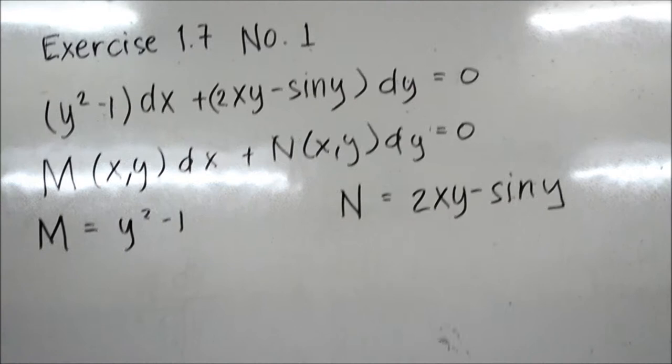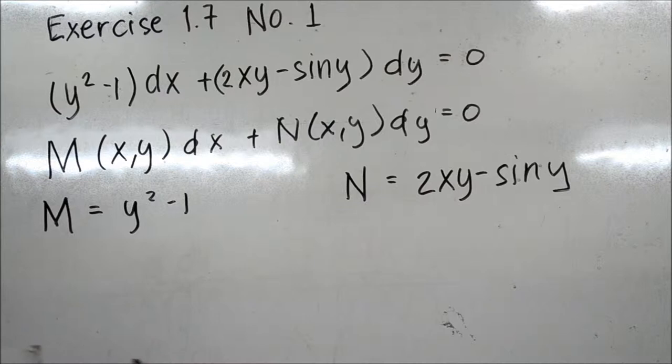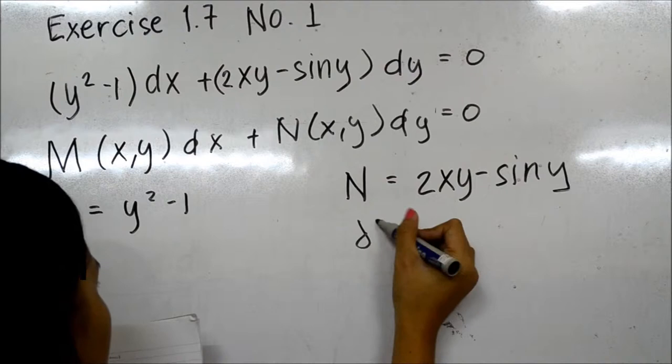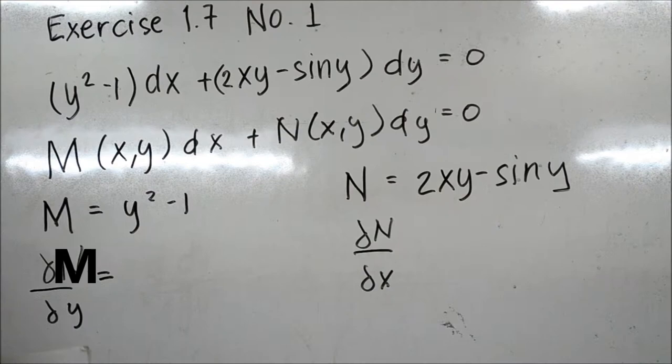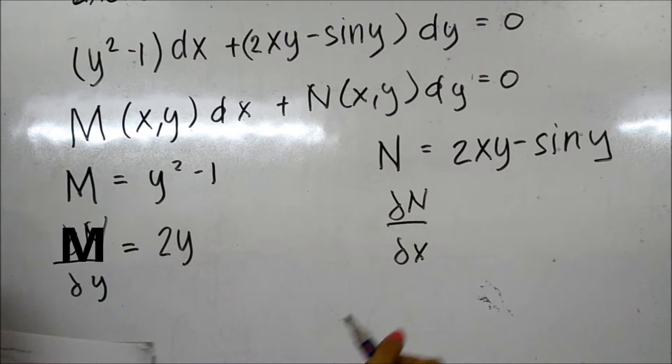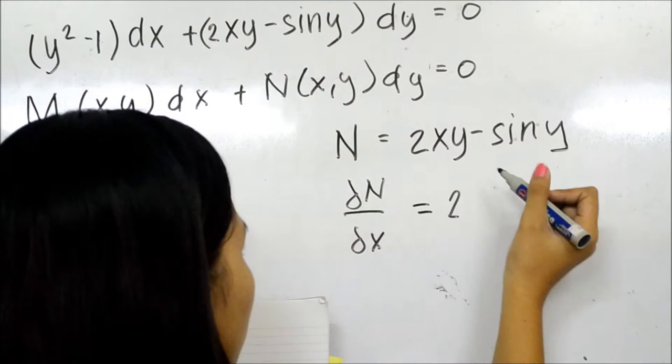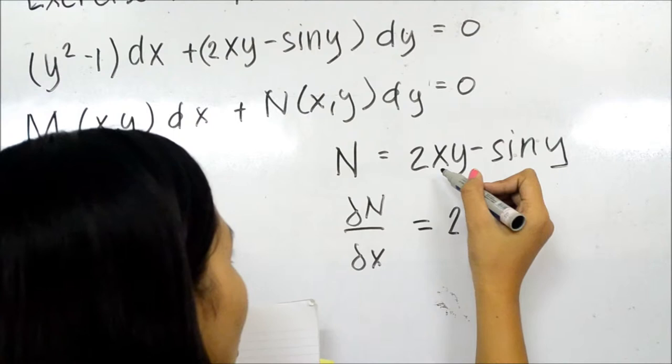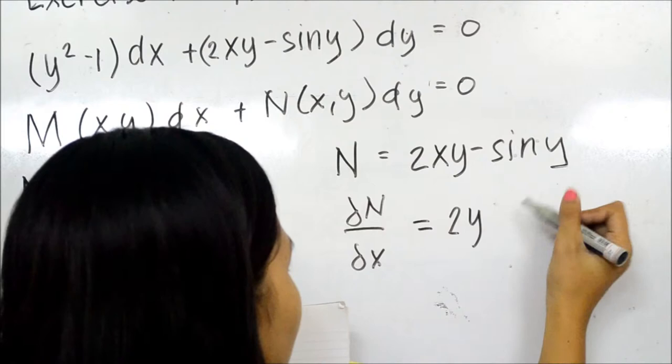The first step is to partially differentiate M with respect to y and N with respect to x. The partial derivative of M with respect to y is 2y. For the partial derivative of N with respect to x, we apply the product rule: 2y times the derivative of x (which is 1), plus the derivative of 2y (which is 0) times x, minus the derivative of sin y (also 0). So ∂N/∂x is only 2y.